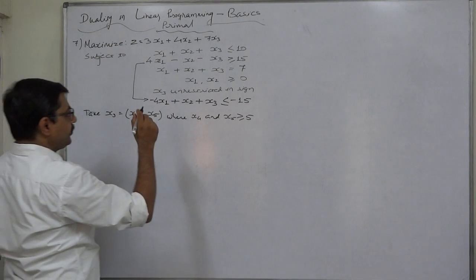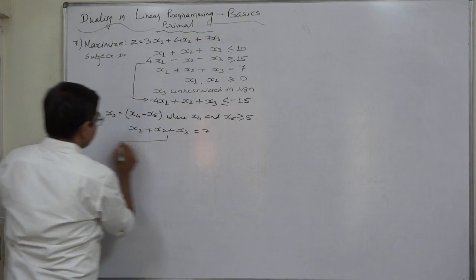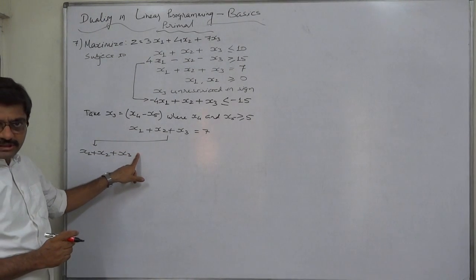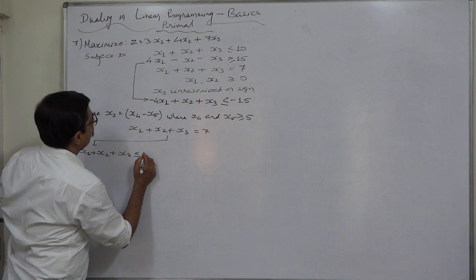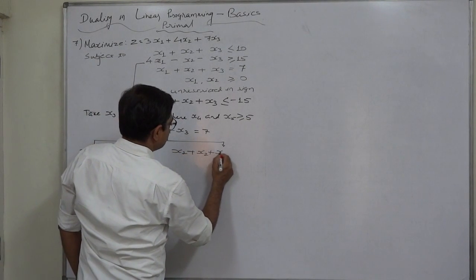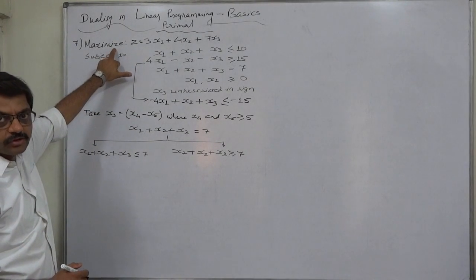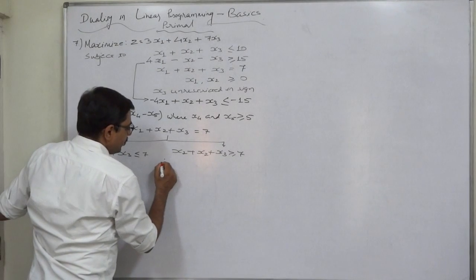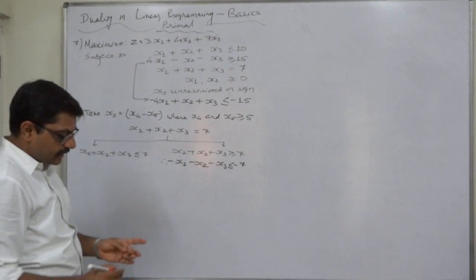Now, what to do with the equality x1 + x2 + x3 = 7? It should be segregated into two inequalities. Since the objective is maximization, the first inequality will be x1 + x2 + x3 ≤ 7. The second sign will be opposite: x1 + x2 + x3 ≥ 7. But this sign does not match maximization, so we flip it: −x1 − x2 − x3 ≤ −7.